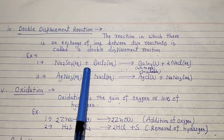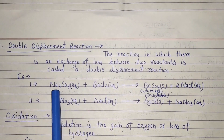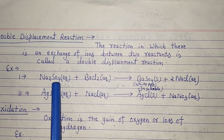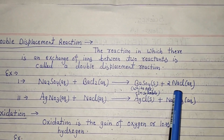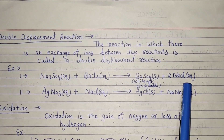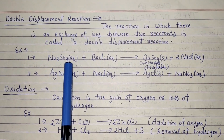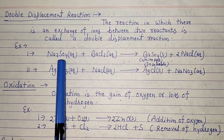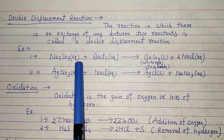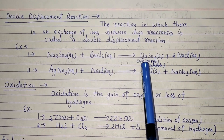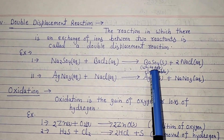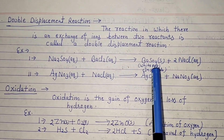For example: sodium sulfate plus barium chloride — these are two reactants whose ions interchange. Sodium and chlorine exchange with barium and sulfate to form sodium chloride and barium sulfate. When we mix sodium sulfate and barium chloride in a test tube, barium sulfate forms as a white precipitate — white precipitate means white insoluble particles.